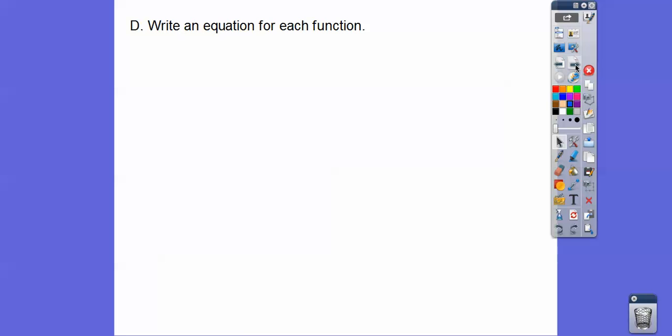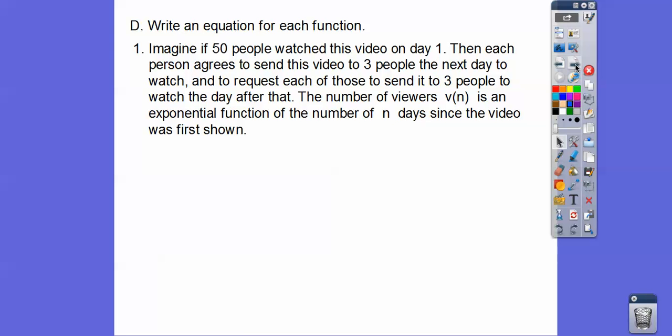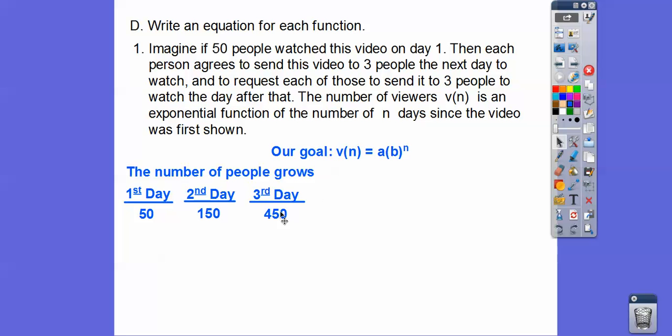Alright, so write an equation for each function here. So imagine if 50 people watched this video on day 1. Then each person agrees to send this video to 3 people the next day to watch, and to request that each of those send it to 3 people to watch the day after that. The number of viewers, which is v sub n, is an exponential function of the number of n days since the video was first shown. Here's the first term, that's a, and then b is it keeps multiplying by 3. So it's going to be, okay, so here's the first day.